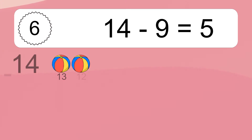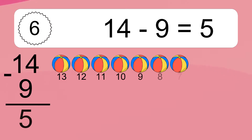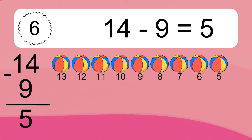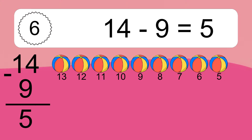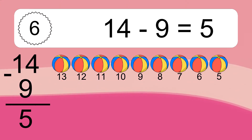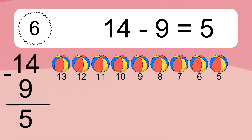14 minus 9 equals what? 14 minus 9 equals 5. Let's count it: 13, 12, 11, 10, 9, 8, 7, 6, 5.